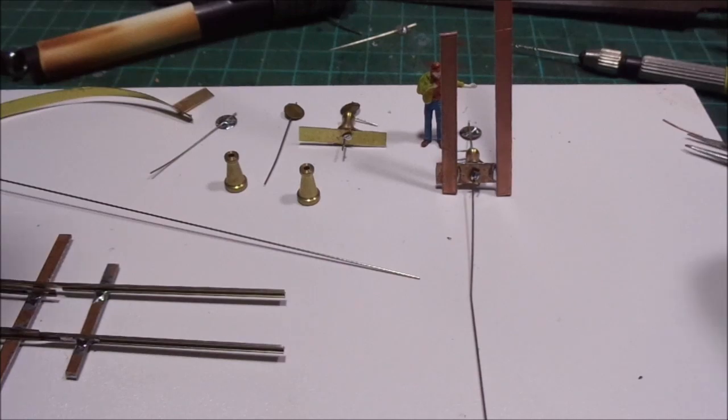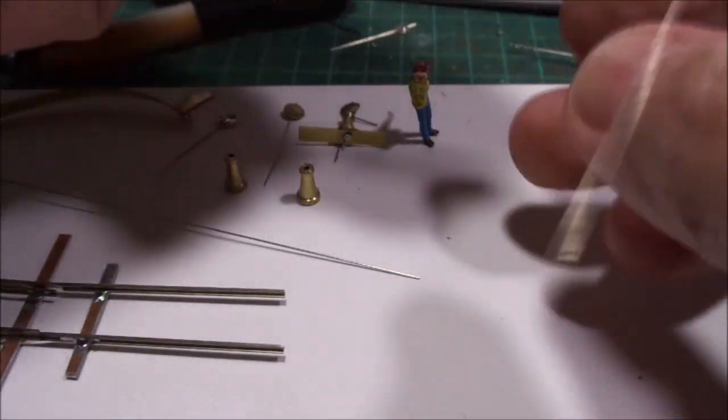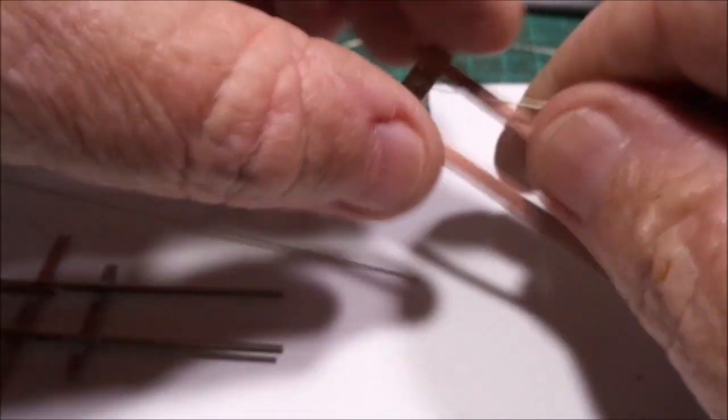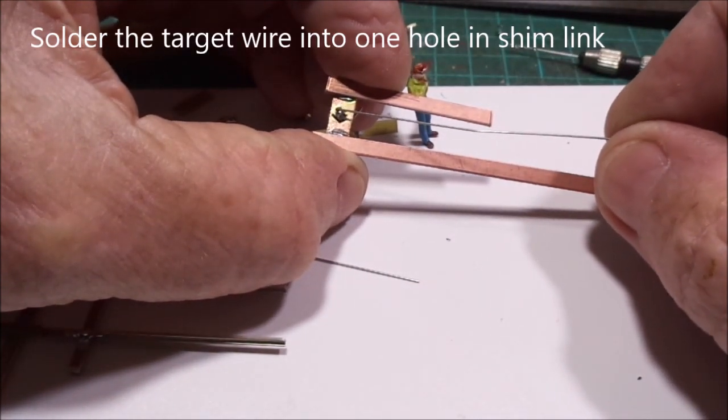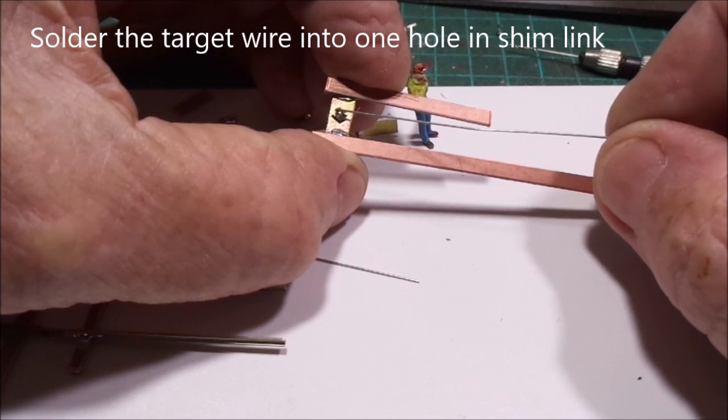That allows a movement. Just turn this around again. That allows that bit of movement if you can see that. That's going to be the hardest part of putting this together.